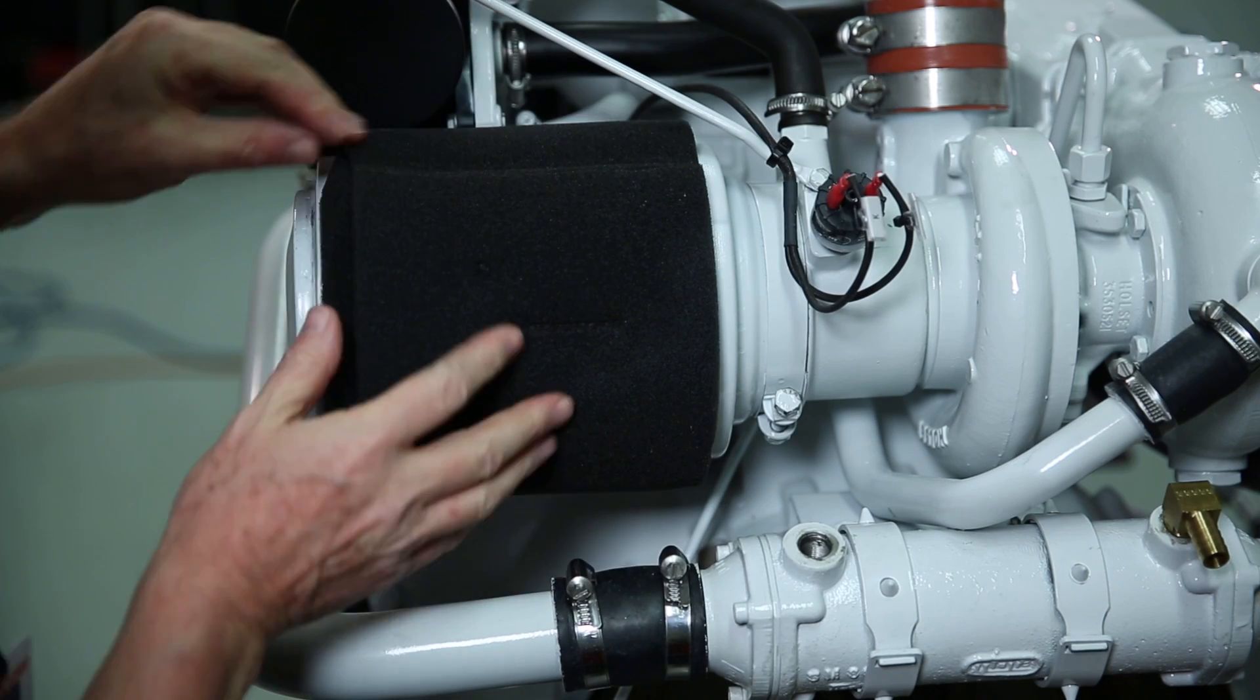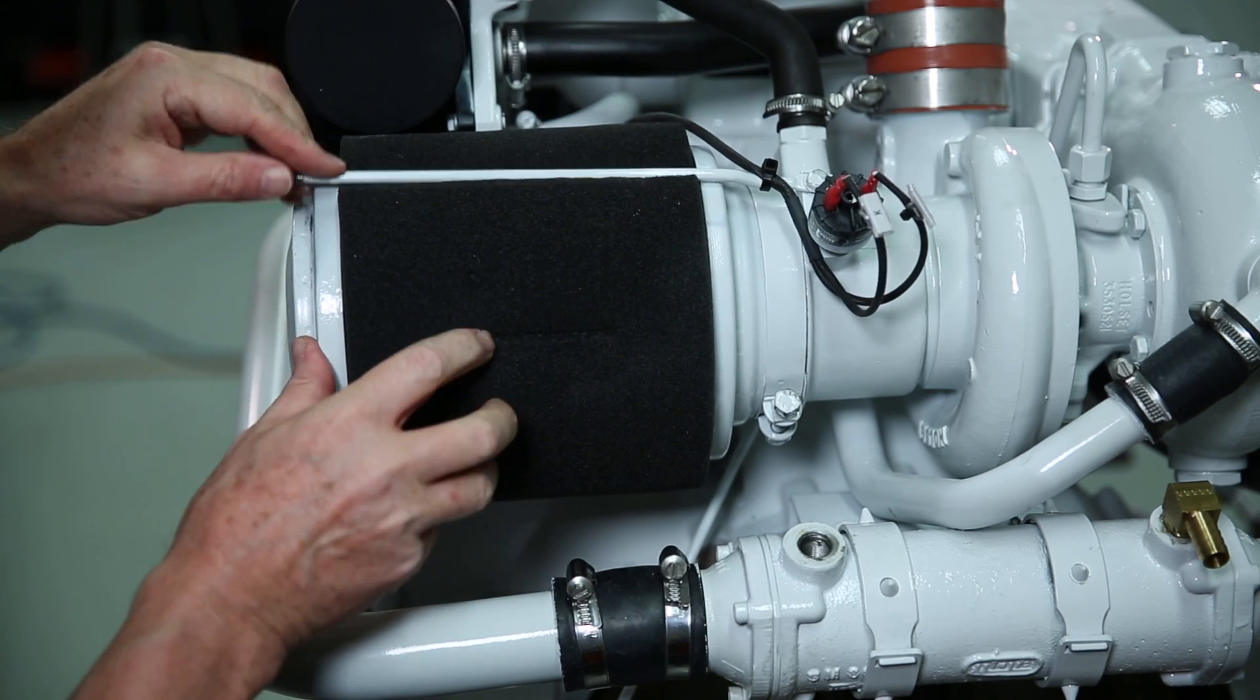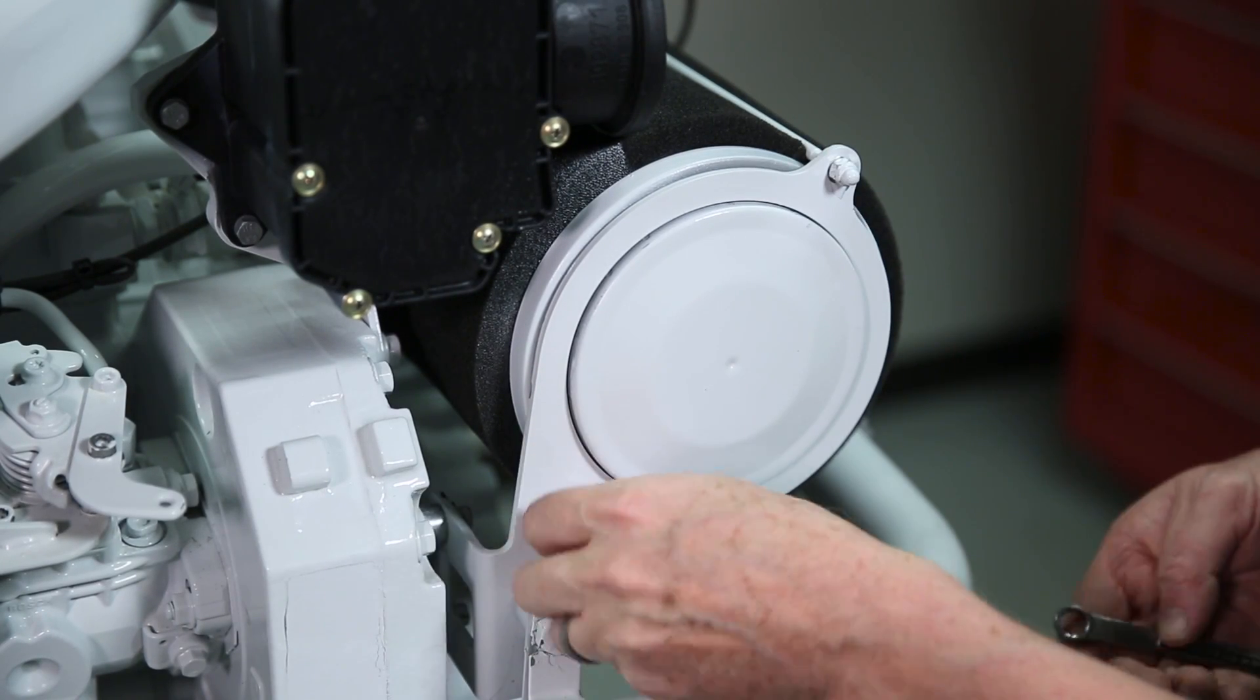Ensure the element is not folded on the ends and is correctly installed. Rotate the air filter supports. Secure the air filter supports to the mounting bracket. Do not tighten the nuts.